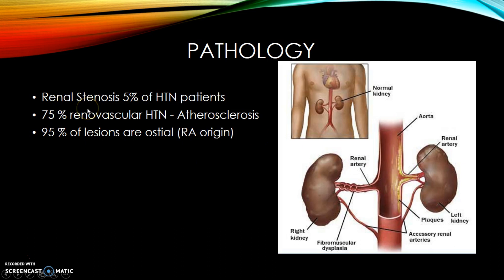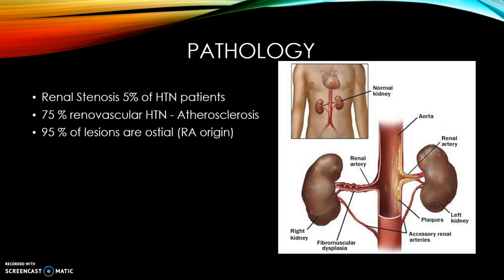Renal artery stenosis occurs in about 5 percent of all hypertensive patients, so most exams will be normal. Approximately 75 percent of renal artery stenosis is caused by atherosclerotic plaque. You can see atherosclerosis and fatty plaque along the wall of the aorta extending into the renal artery. About 95 percent of lesions are ostial — occurring at the origin of the renal artery where it takes off from the aorta.